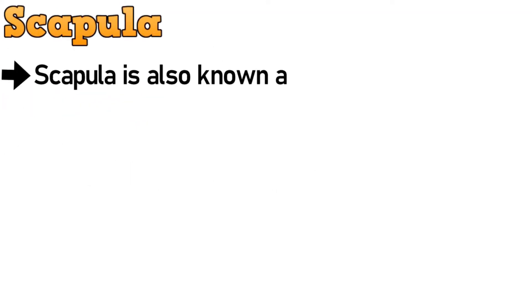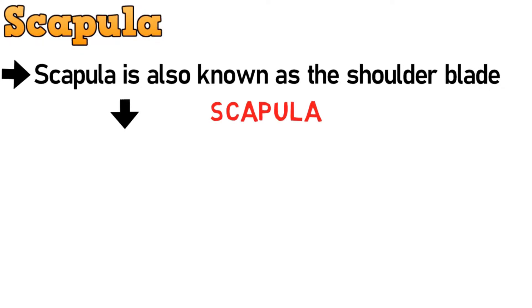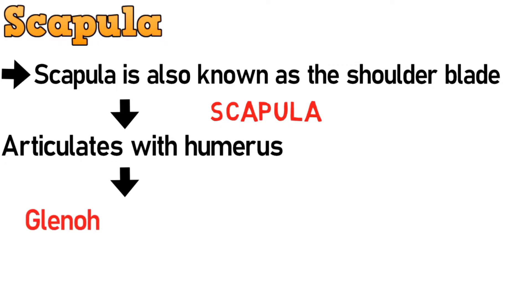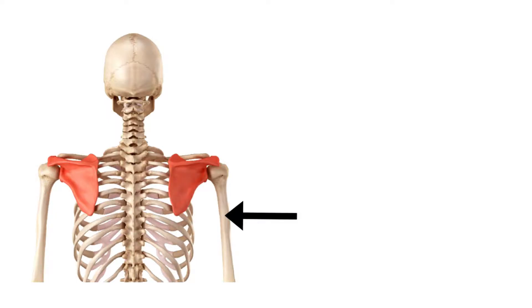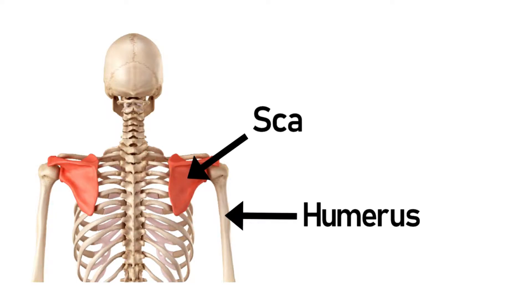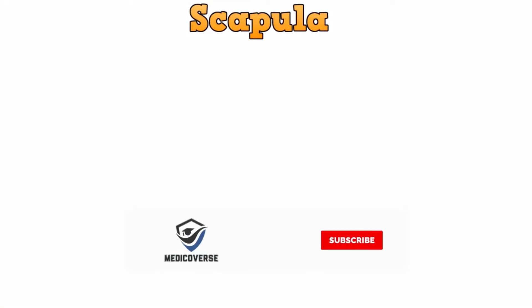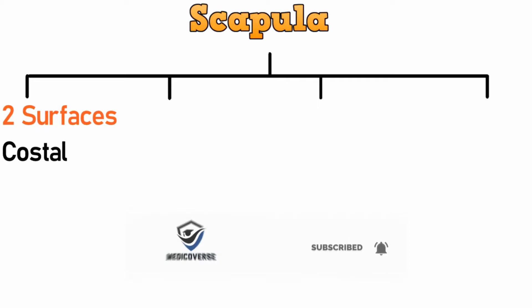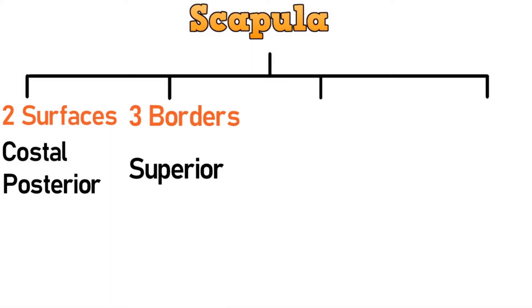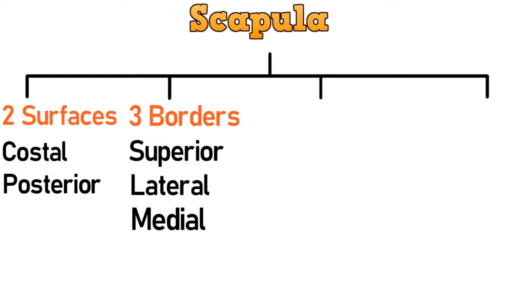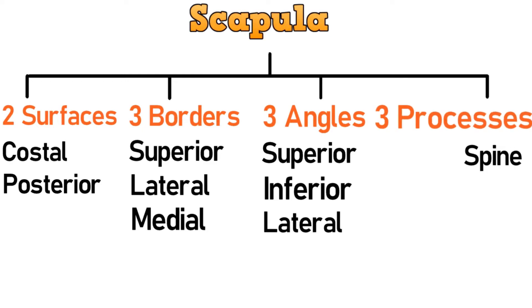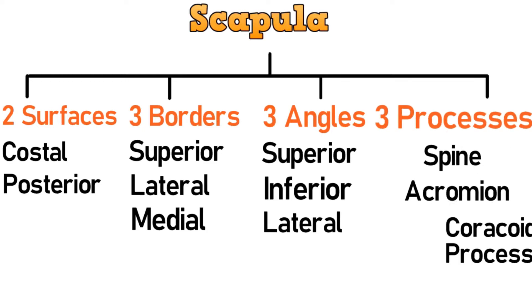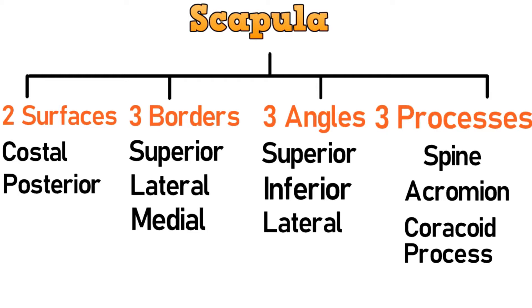Starting with the general features. Scapula is also known as the shoulder blade. It articulates with the humerus to form the glenohumeral joint and with the clavicle to form the acromioclavicular joint. The scapula has two surfaces — costal and posterior — three borders: superior, lateral, and medial — three angles: superior, inferior, and lateral — and three processes: spine, acromion, and the coracoid process. We will discuss each of these parts separately and see what anatomical features they possess.